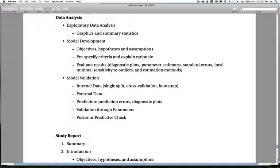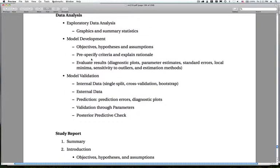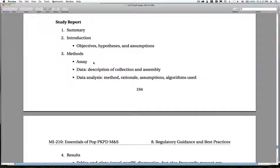On the data analysis side, they discuss exploratory data analyses, graphical and summary statistics. Talking about model development and how important it is to identify objectives. Pre-specifying criteria and explaining the rationale. And evaluating the results based on a variety of methods. Then they roll into discussing validation of the model through internal or external methods. Cross-validation bootstrapping. Predictive checks. Validation through parameters. These are all things that we've talked about in the course. And you'll see that they're echoed here in the guidance.